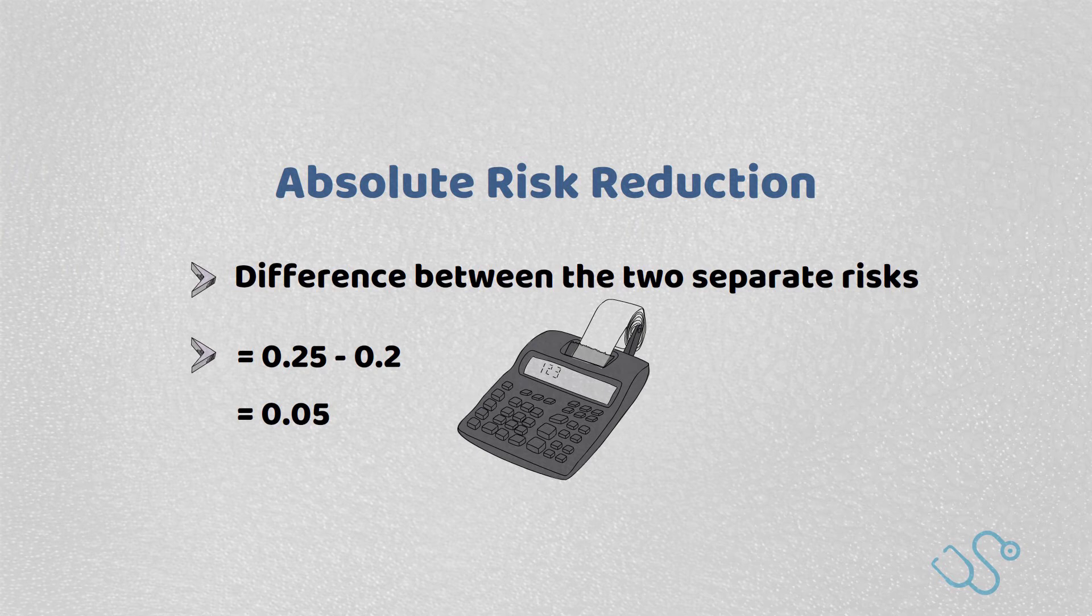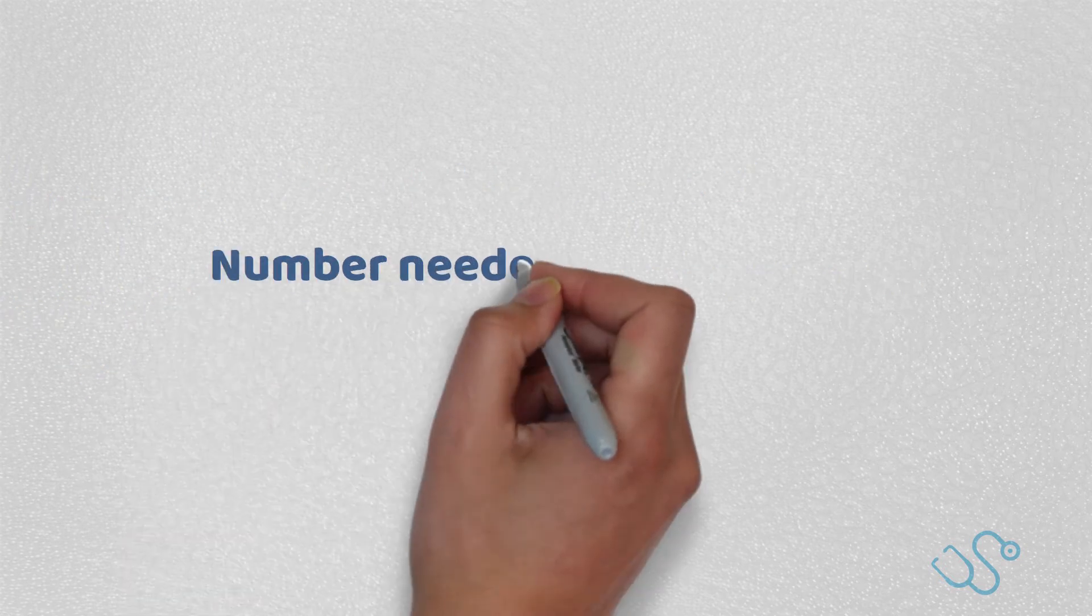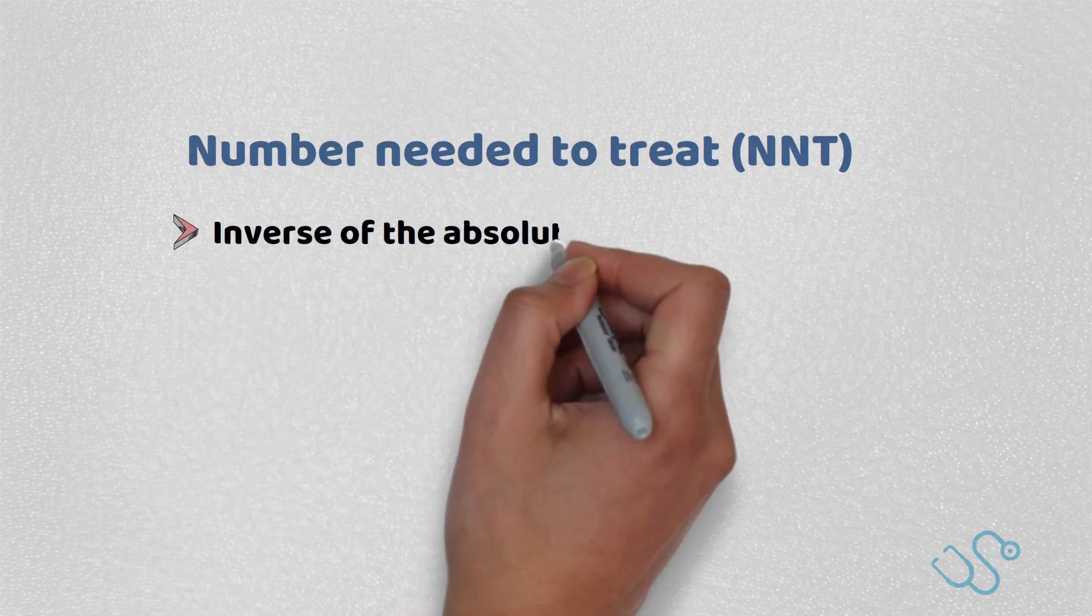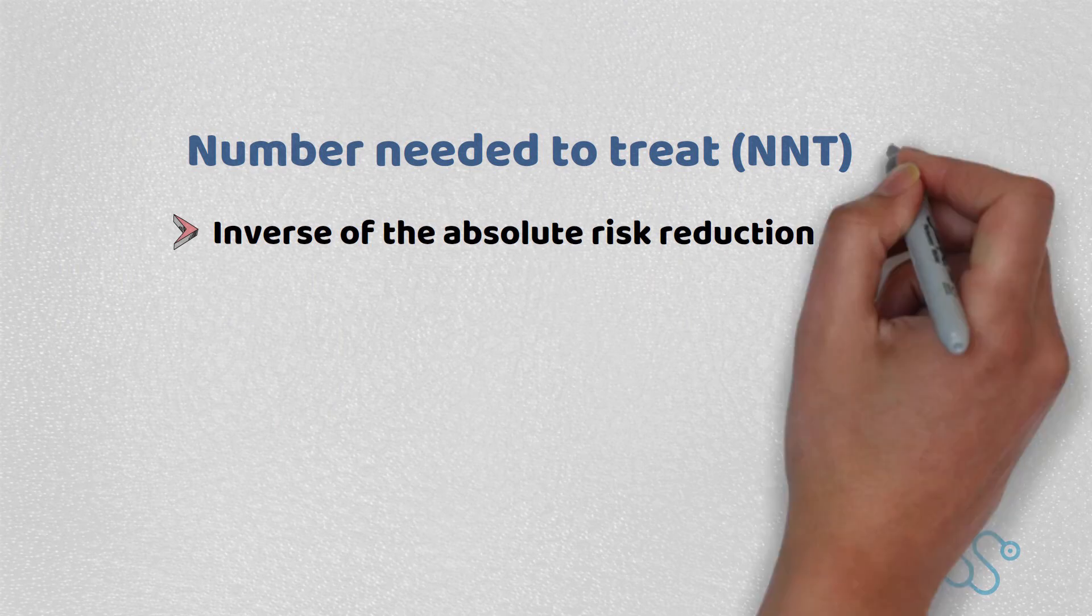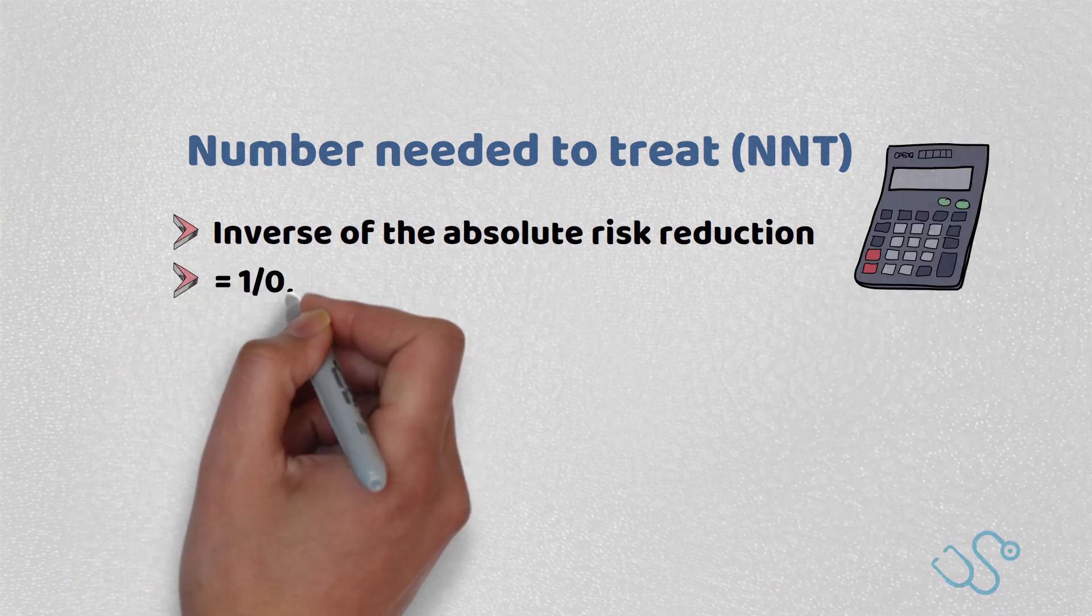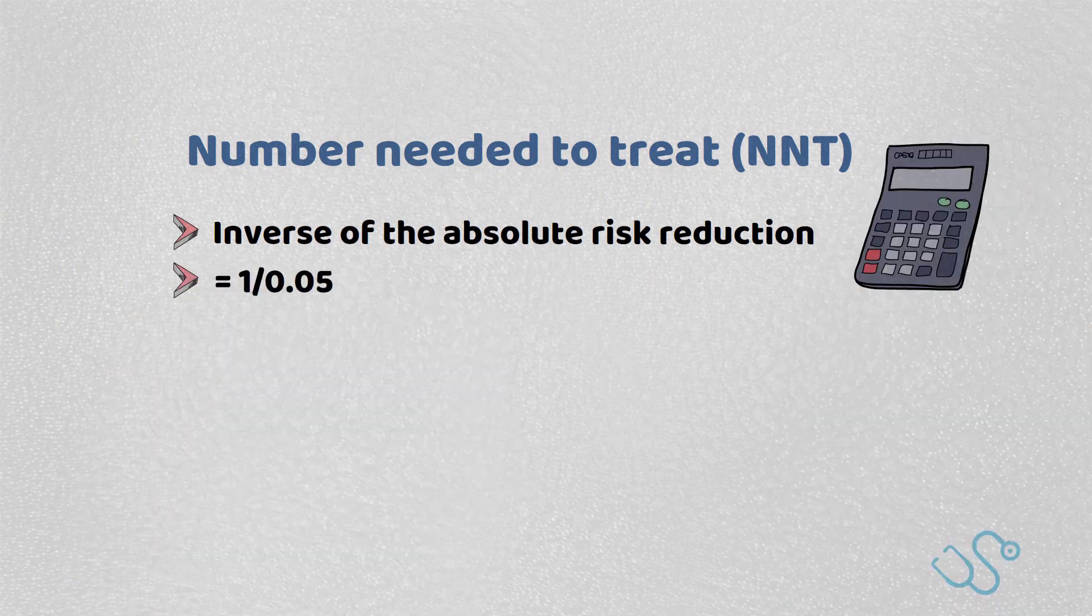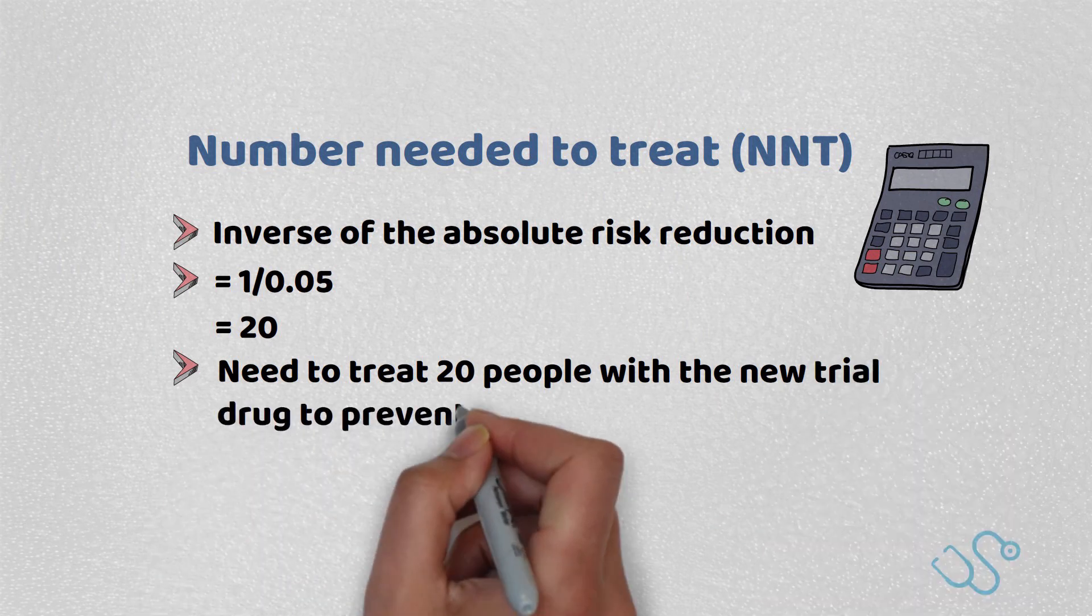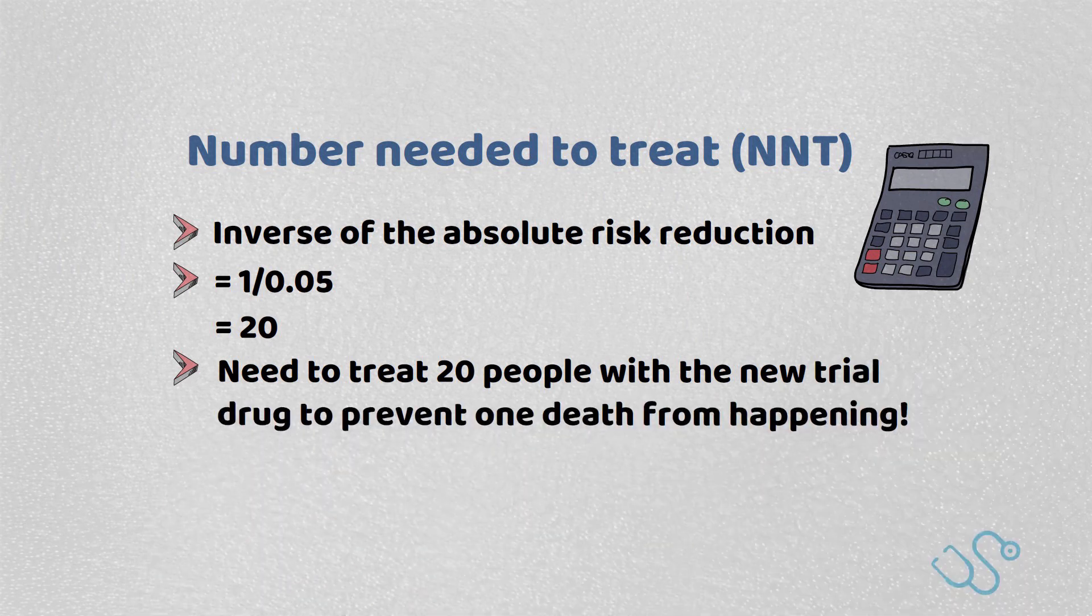With the absolute risk reduction, you can also work out something called the number needed to treat, or NNT. This is basically mathematically the inverse of the absolute risk reduction. So using our calculator, this is 1 divided by 0.05, which gives you an answer of 20. This means you would need to treat 20 people with the new trial drug to prevent one death from happening.